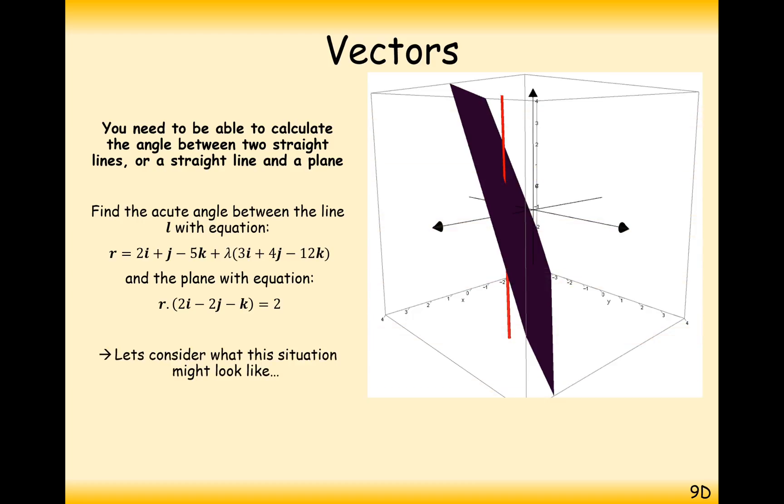What we have here is the equation of a line and an equation of a plane. And what we're looking for is this angle here that is the angle between the line and the plane. What we ideally would like is this line going in this direction here, because we know that one of our methods that we have to find the angle between two objects is to use the dot product.